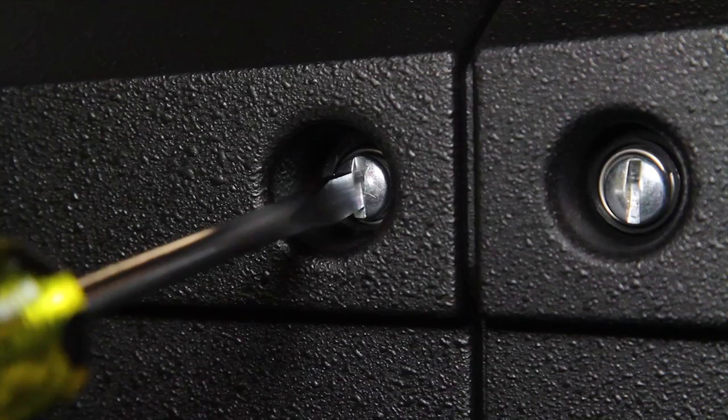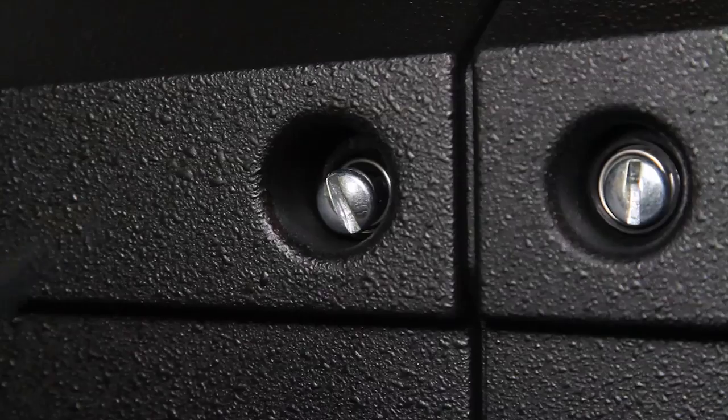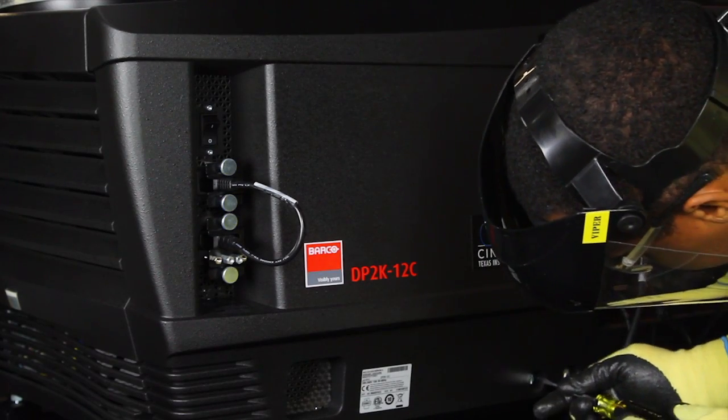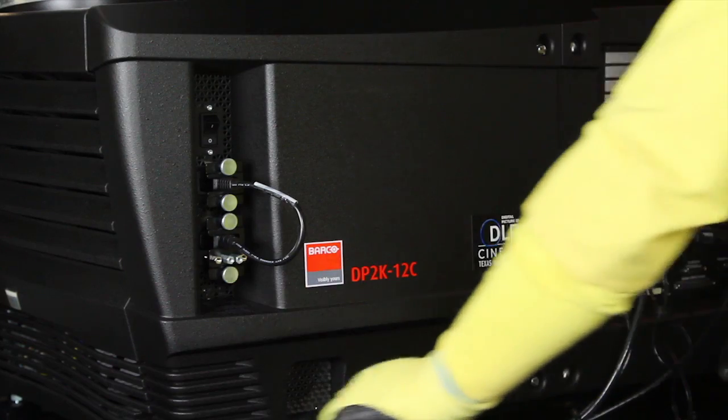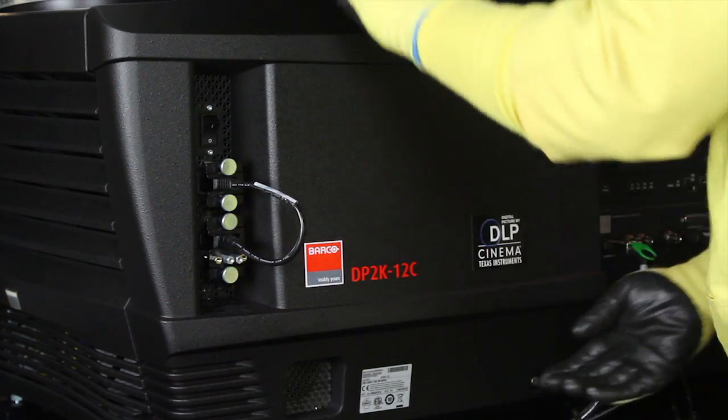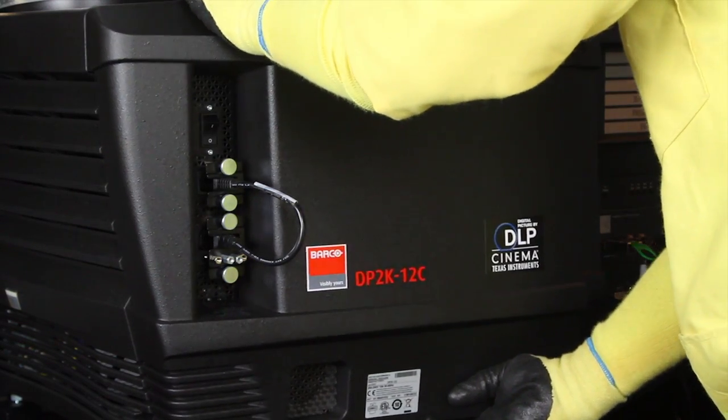Open the side door by using a flat blade screwdriver to loosen the two captive screws. Set the door aside.